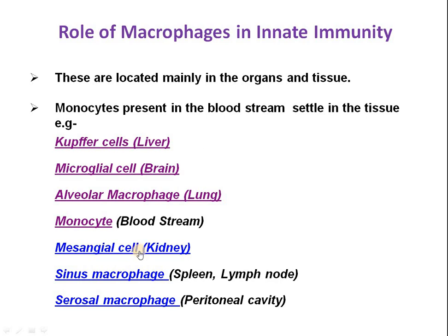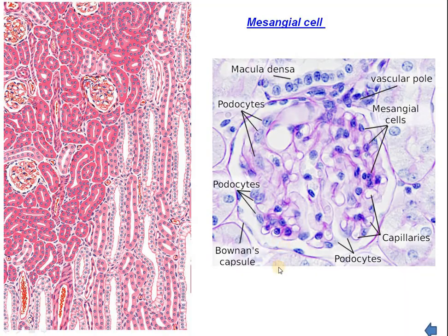There are also phagocytic or macrophagic cells found in the kidney, called mesangial cells. Looking at the histological structure of the kidney, you can see the proximal and distal convoluted tubules and the glomerulus surrounded by Bowman's capsule. The glomerulus consists of small capillaries found within the kidney, and near these capillaries are mesangial cells responsible for showing phagocytic activity — the macrophagic cells present within the kidney.